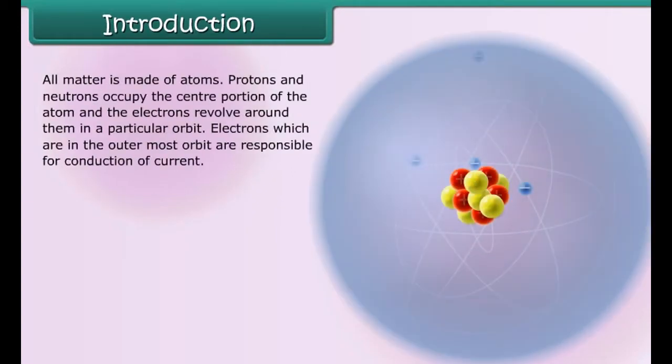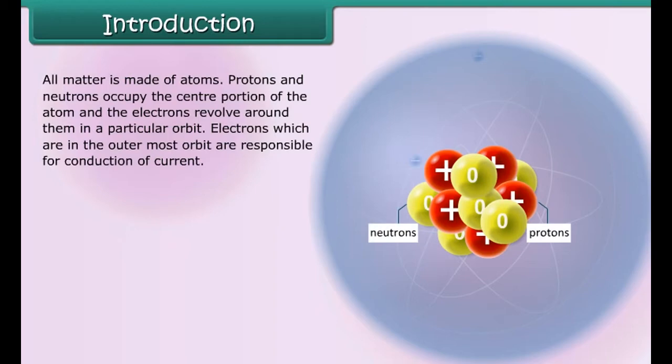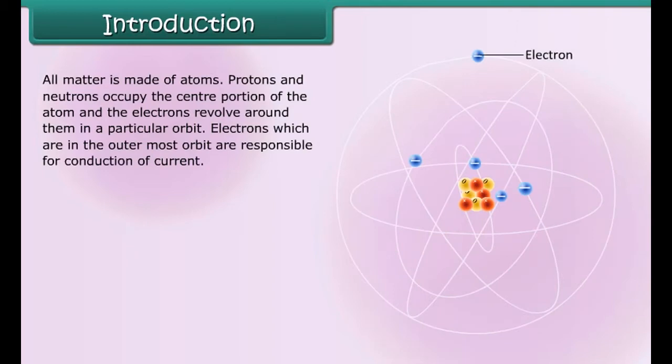All matter is made of atoms. Protons and neutrons occupy the center portion of the atom, and the electrons revolve around them in a particular orbit. Electrons which are in the outermost orbit are responsible for conduction of current.